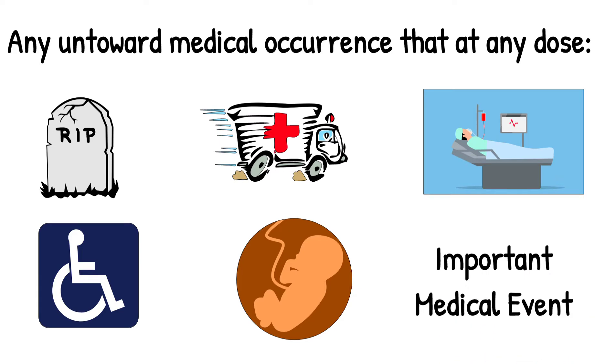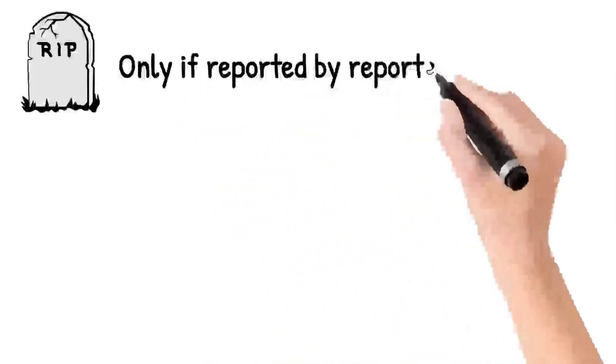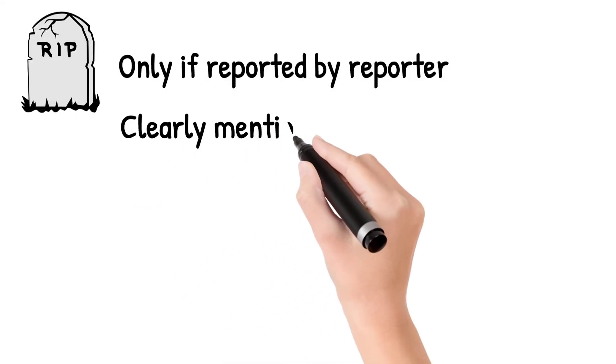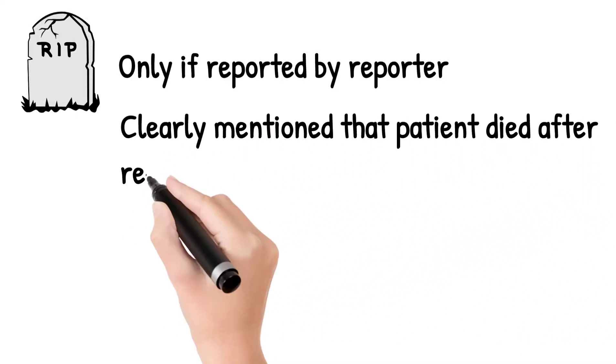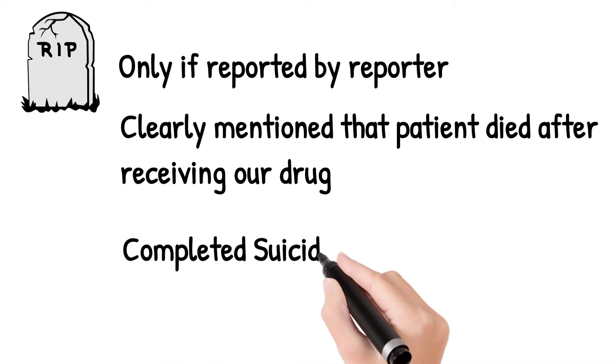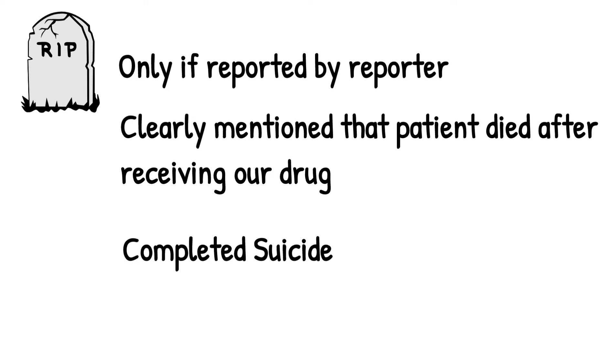Now we will discuss each seriousness criteria in detail. The first seriousness criteria is death or fatal. There are a few criteria based on which you can consider seriousness of any event as death. First: only if seriousness is reported by the reporter as death or fatal in the report. Second: if the reporter clearly mentioned that the patient died after receiving the drug. Third: if the reported event is completed suicide, then it should be categorized under seriousness death.